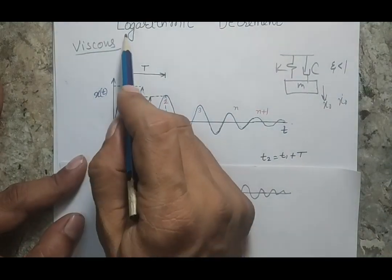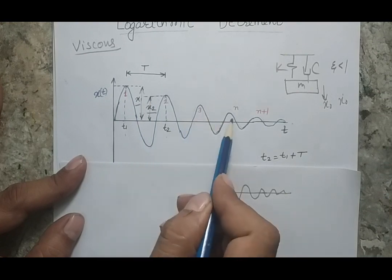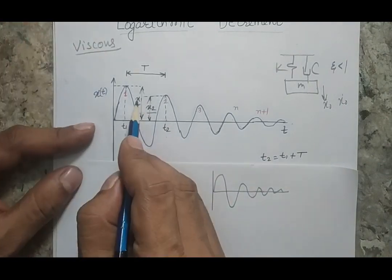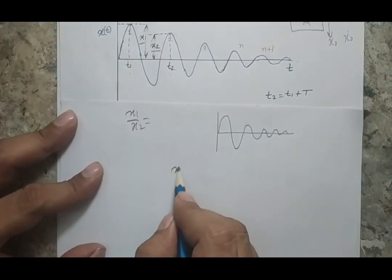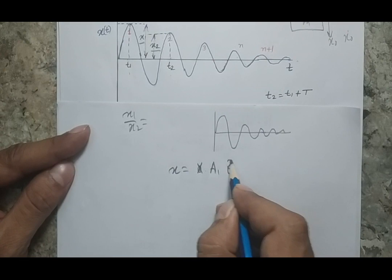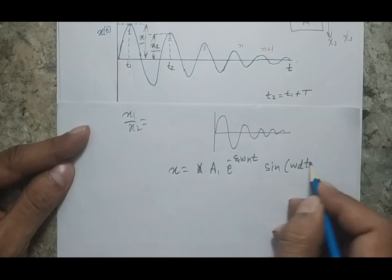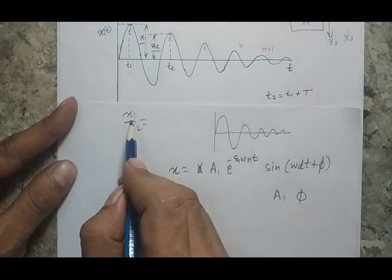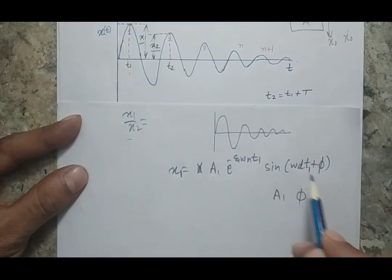Now, what is logarithmic decrement? Logarithmic decrement basically tells us a relation between the reduction in successive peaks — or the ratio of any two peaks. So if I write the ratio x1 by x2, since this is an under-damped system, the response can be written as: a1 · e^(−ζωₙt) · sin(ωd·t + φ), where a1 and φ are two unknowns. To find x1 by x2, I use this expression for x1 by putting time t1.